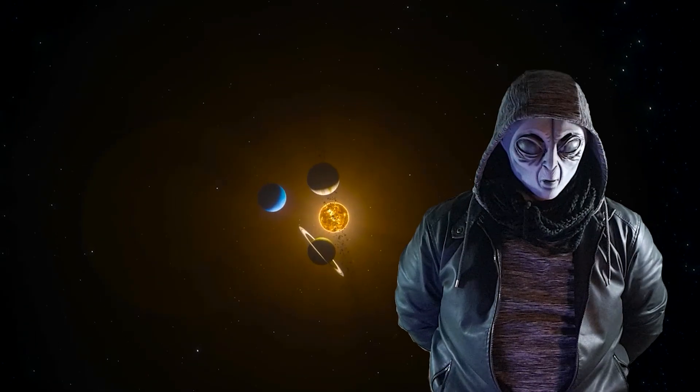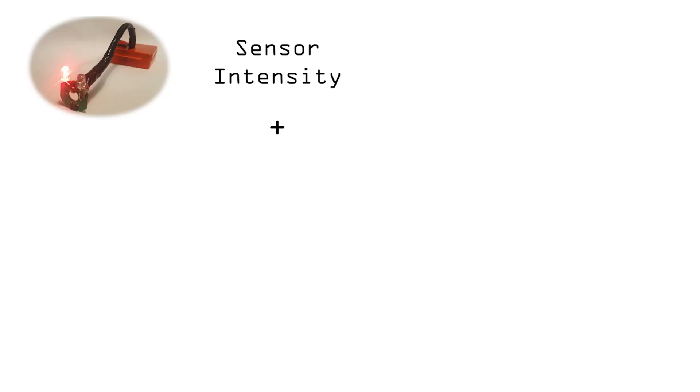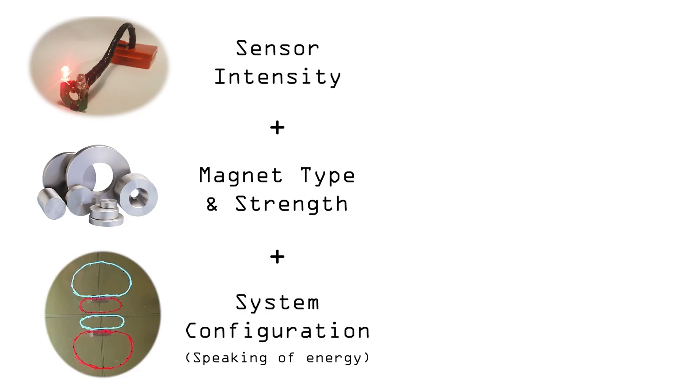This too must be integrated into the association with n. In conclusion, these factors, sensor intensity, magnet type, and system configuration combine to represent the equivalent of the principal quantum number n in this macroscopic model.